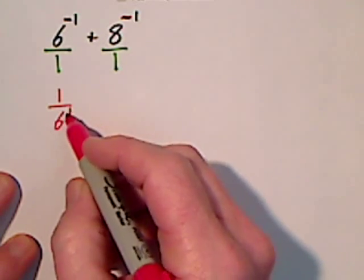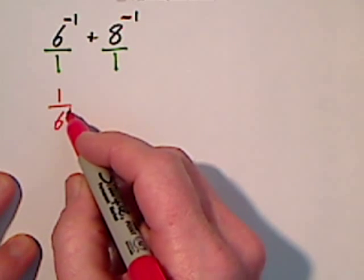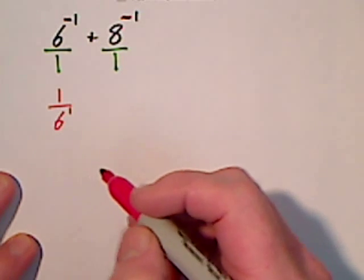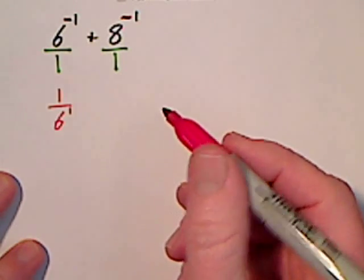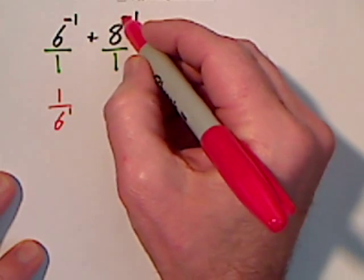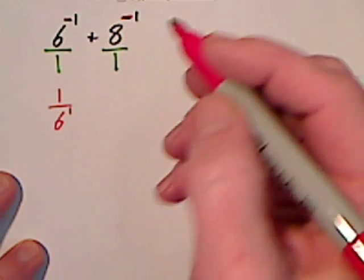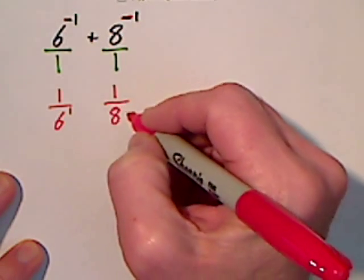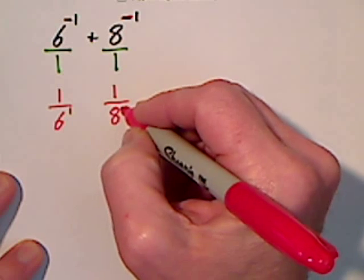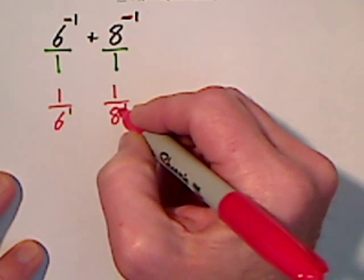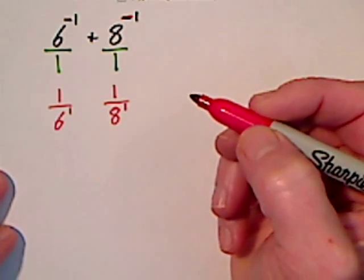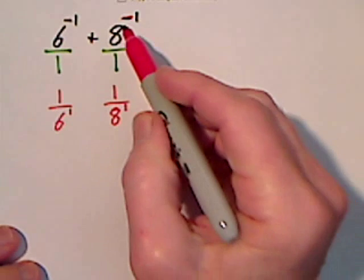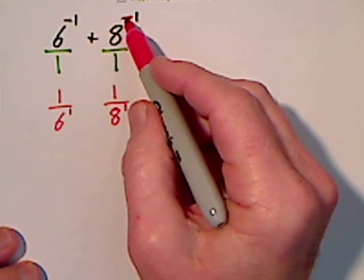A positive 1 exponent is always understood to be there — it's inconsequential. By the same token, this negative exponent means take the reciprocal, so we end up with 1 over 8. The 8 is now to the positive 1, which is largely meaningless, but when you have a negative exponent it's a big deal and you've got to deal with that.